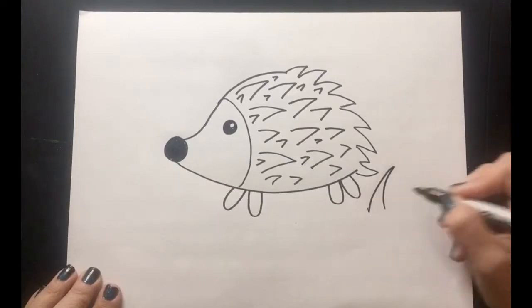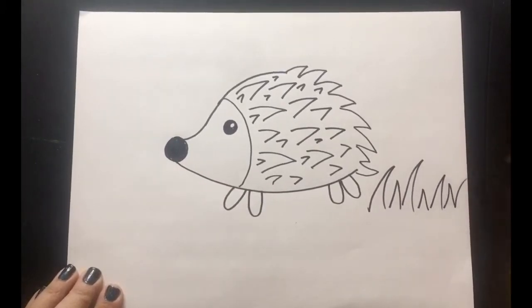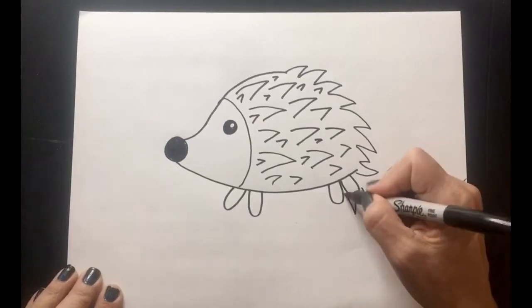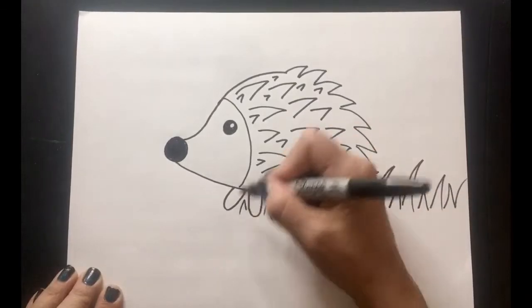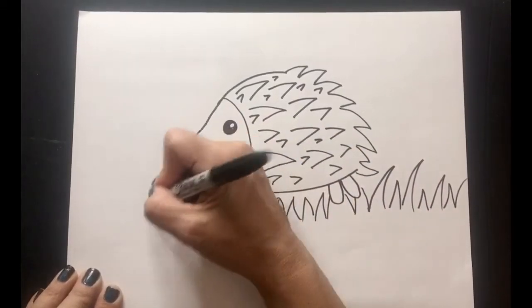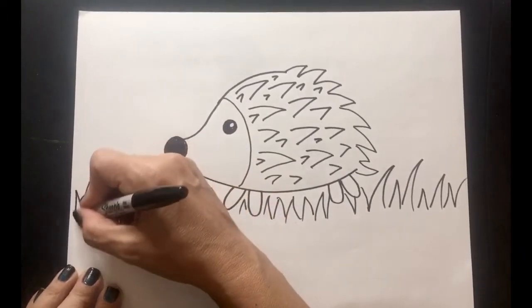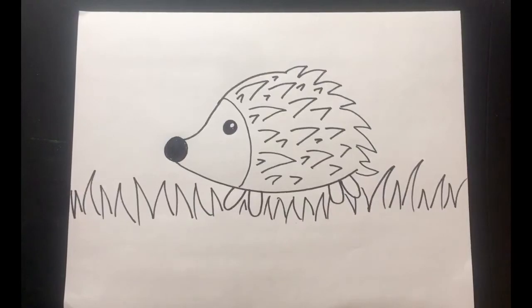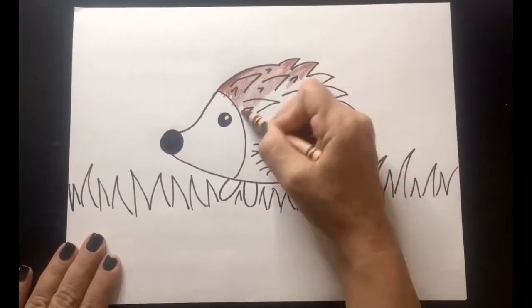We can even create texture when we draw the blades of grass. Notice I'm using the same sort of shape as I did for the hedgehog's quills. Don't forget to color it in.